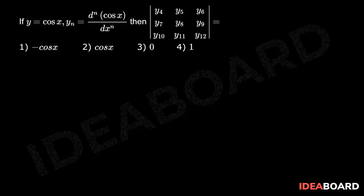If y equals cosx, and yn equals to d power n of cosx by dx power n, then determinant of y4, y5, y6, y7, y8, y9, y10, y11, y12 equals to: